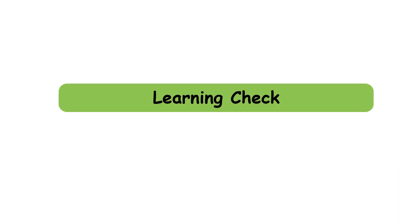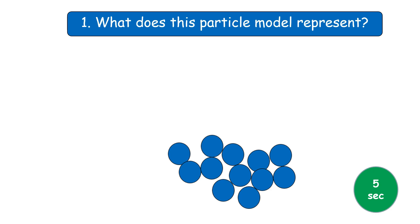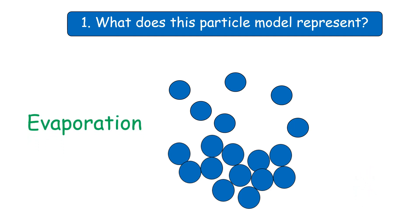Time for your first learning check. There are three questions. You have five seconds for each. Question one. What does this particle model represent? The answer is evaporation.